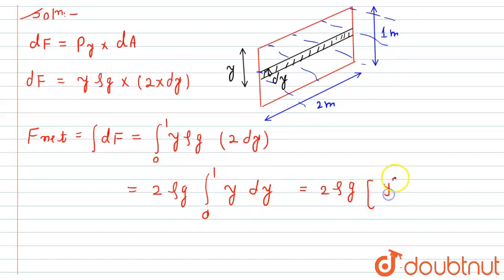We have taken this one because the height of the aquarium is 1 meter. After taking the integral, this will become 2 rho g in bracket y squared divided by 2 from 0 to 1. So after putting the limits, this will become 1 by 2.